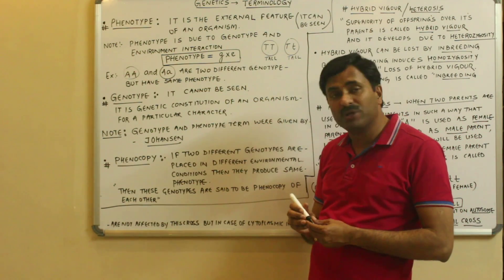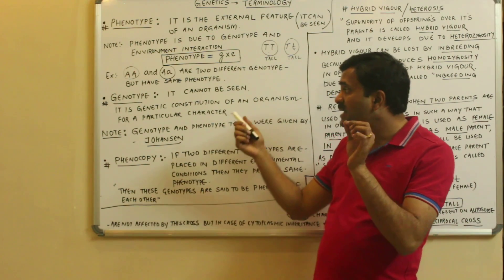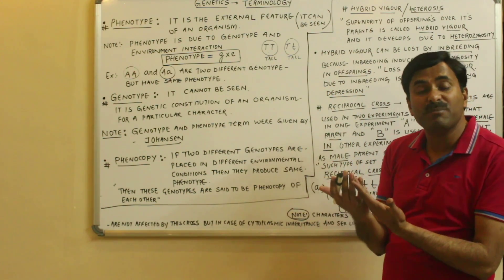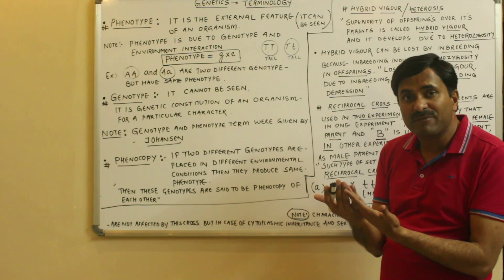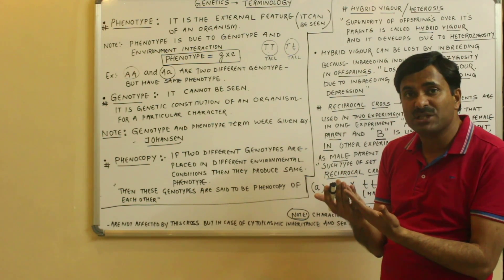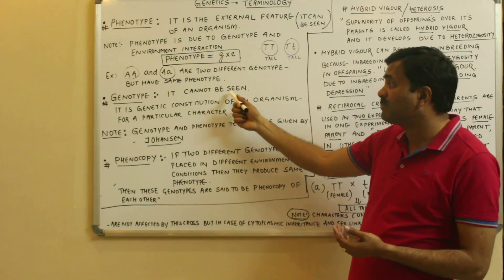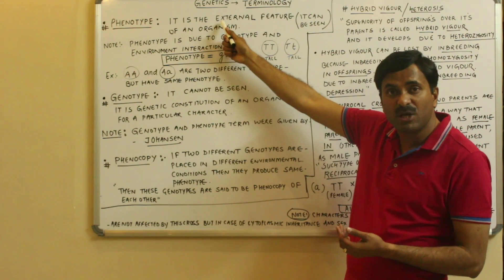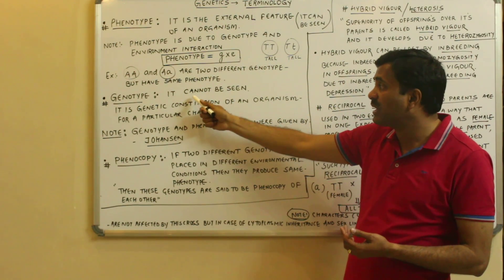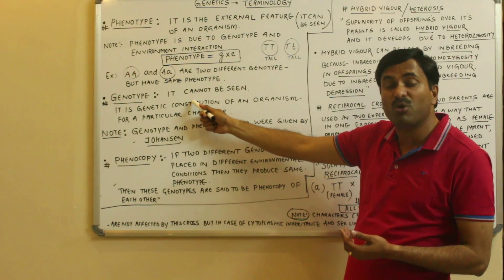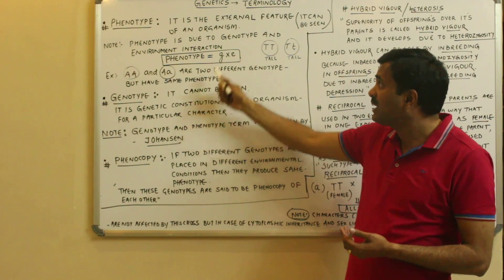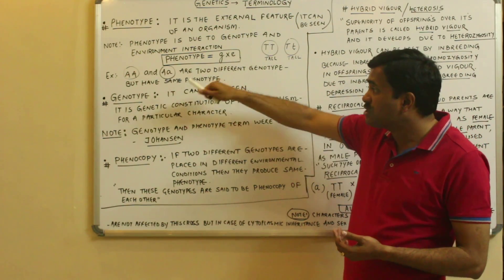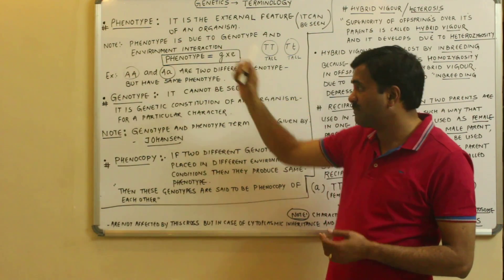Now the question arises: what is genotype? Genotype is the genetic constitution of an organism — the genetic makeup — and genes are not visible, so it cannot be seen. The main difference is: phenotype is the external makeup of an organism, genotype is the genetic makeup. Phenotype can be seen but genotype cannot. Genotype produces the phenotype.